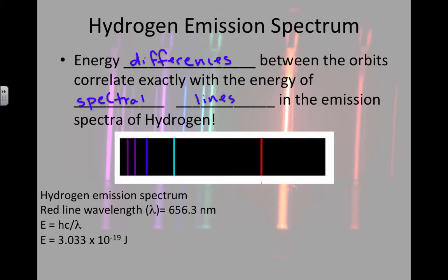So if we look at the red line wavelength, the red line has a wavelength of 656.3 nanometers. We can use E equals H times frequency and then convert the frequency to the wavelength using C equals lambda times the frequency. Then we can calculate the energy associated with red.